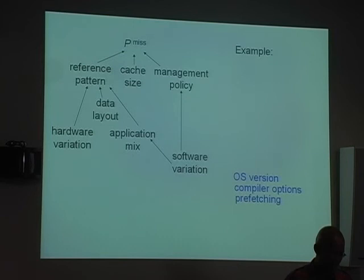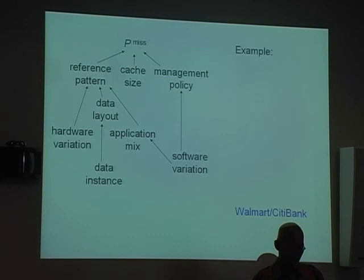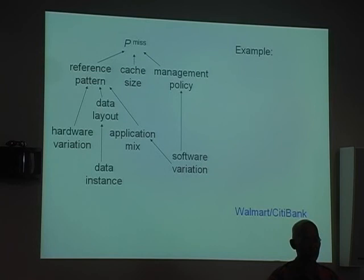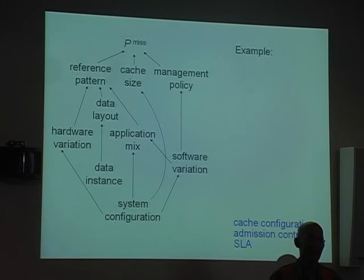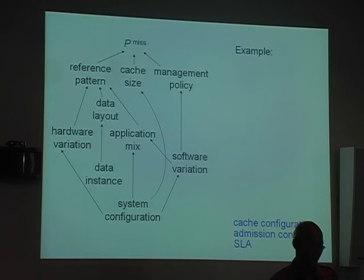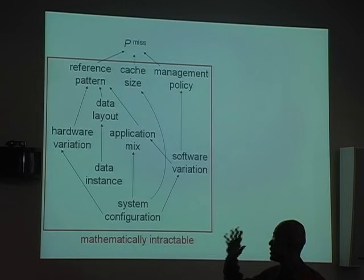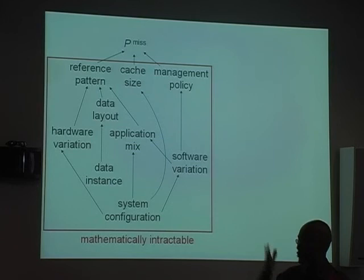What version of the OS you're using, what compiler options you have, whether prefetching is turned on — all of these affect the reference pattern. The biggest buyers of supercomputing are actually Walmart and Citibank, and for these people their data is always changing, so the reference pattern is continually changing. When you look at this whole picture, it's just not tractable. There are not enough equations you can write that will completely describe the interactions, and even if you could write them, you cannot solve them.